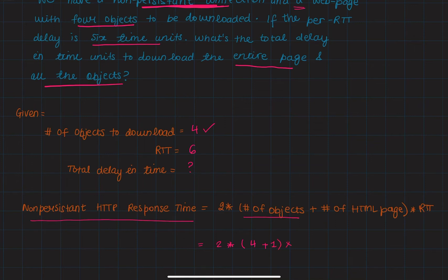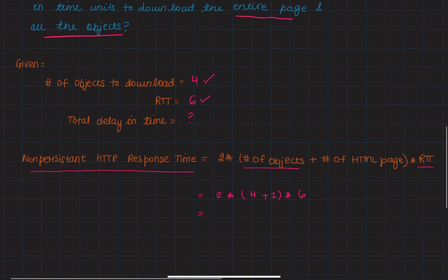times our RTT, which is six, and after calculating this number we get 60 and that's our answer. 60 time units.